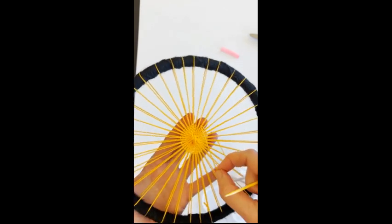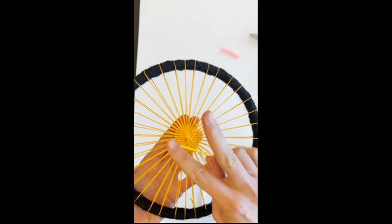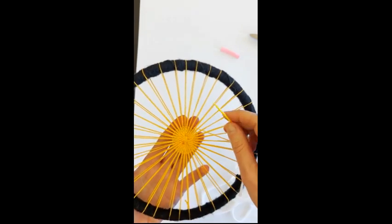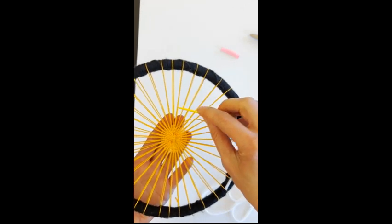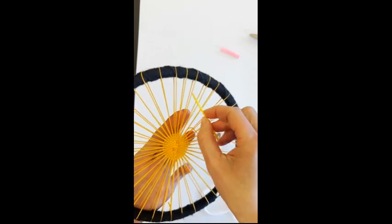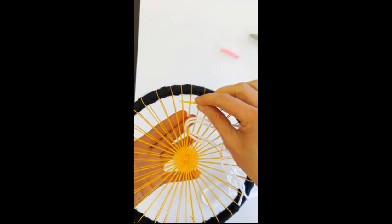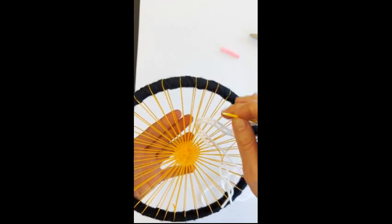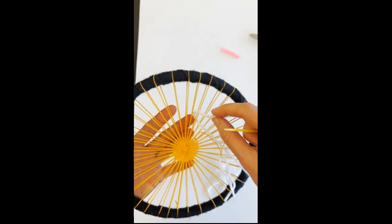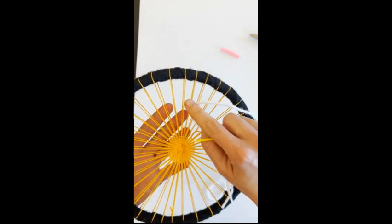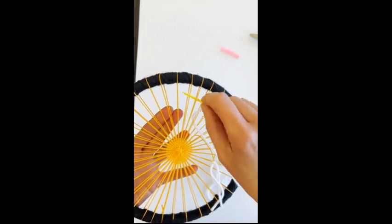To do twill weave it's a little bit different. I'm going to go over two under one. So it's a slightly different pattern. I'm going over these next two and under one and I do think it's easier to weave in these more wide apart places and then just pull it into the center as I keep working. So I'm gonna go over two under one.